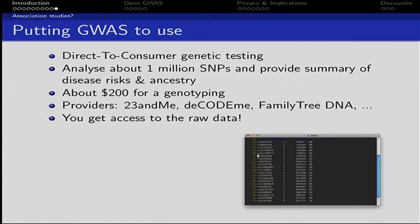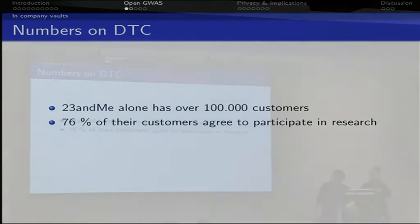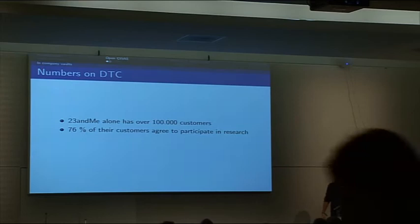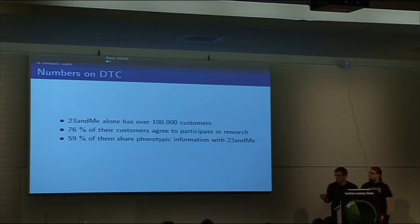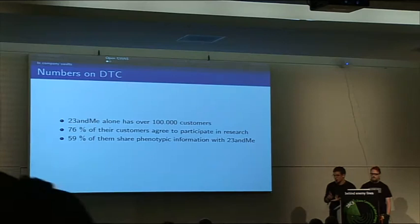23andMe alone has over 100,000 customers, and according to their numbers, 76% of their customers agreed to have their data used in research, and 59% of them shared their phenotypic information with the companies. Phenotypic information is everything describing your body — eye color, risk to develop diabetes, skin color, all of that.